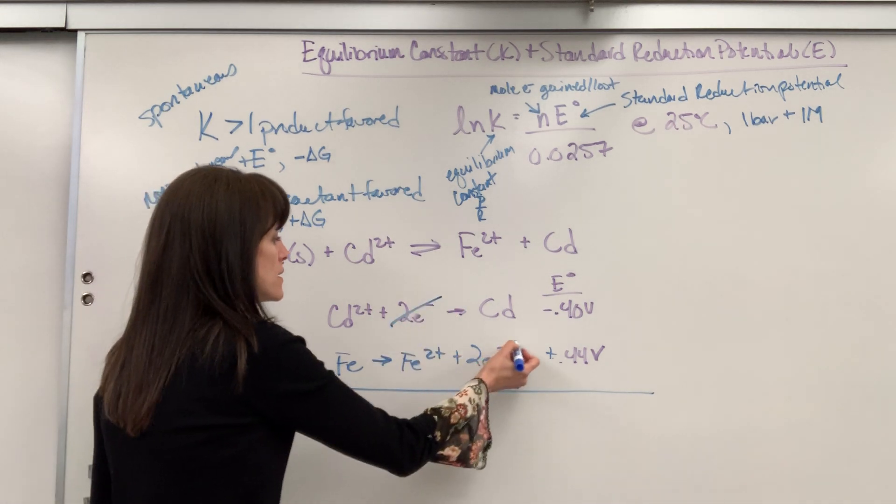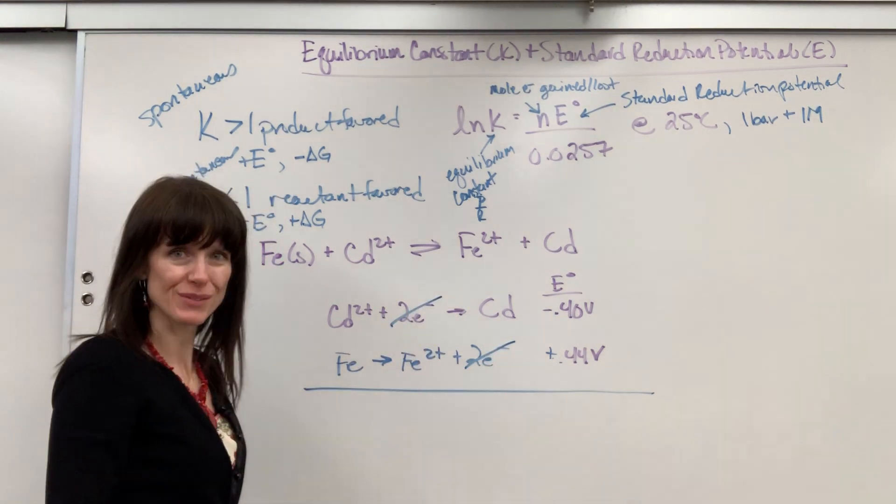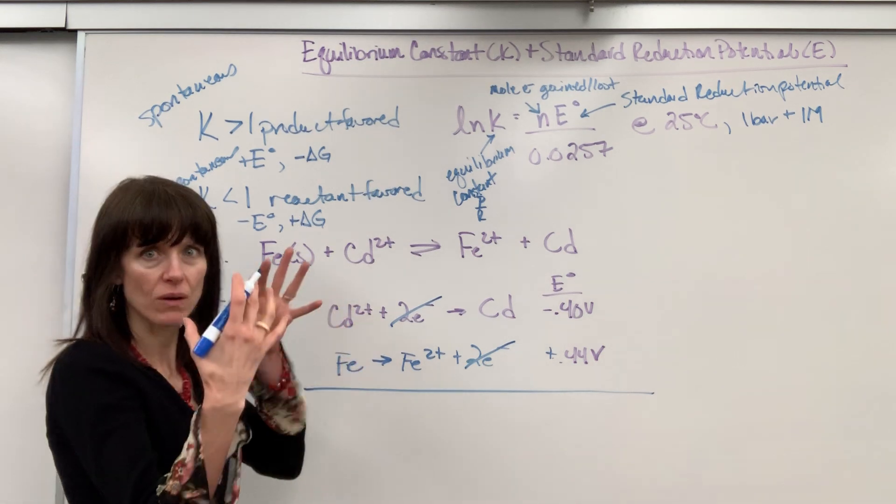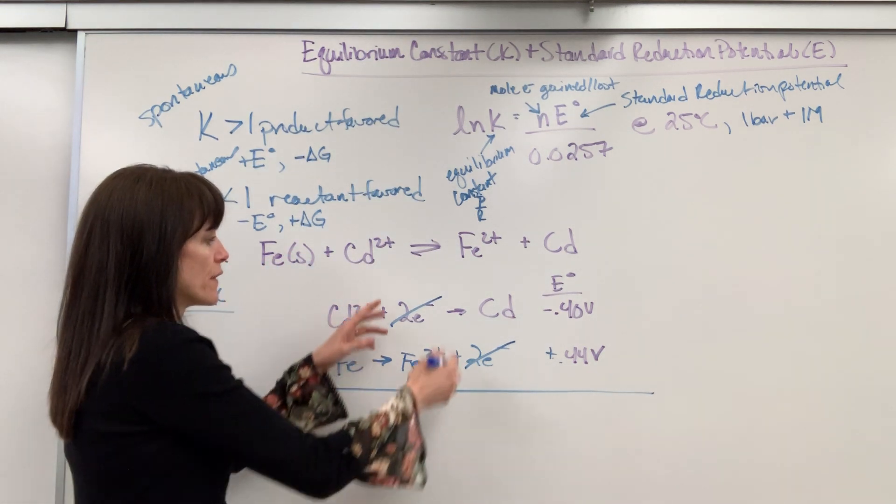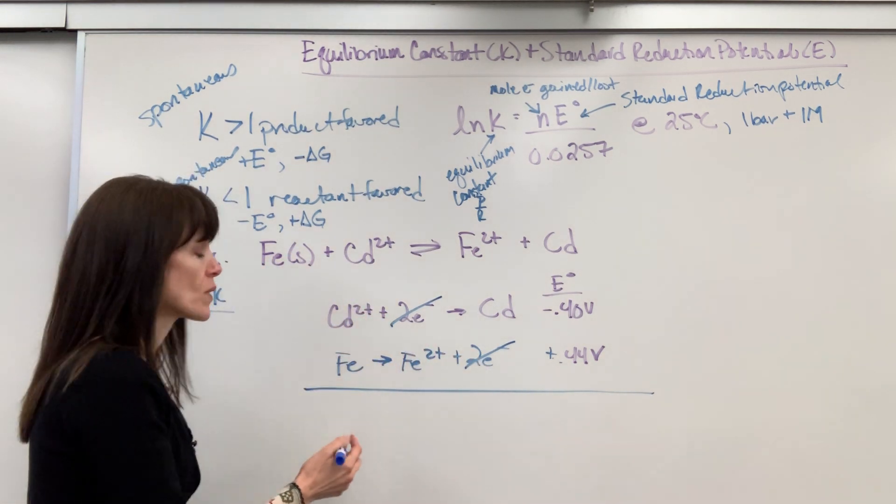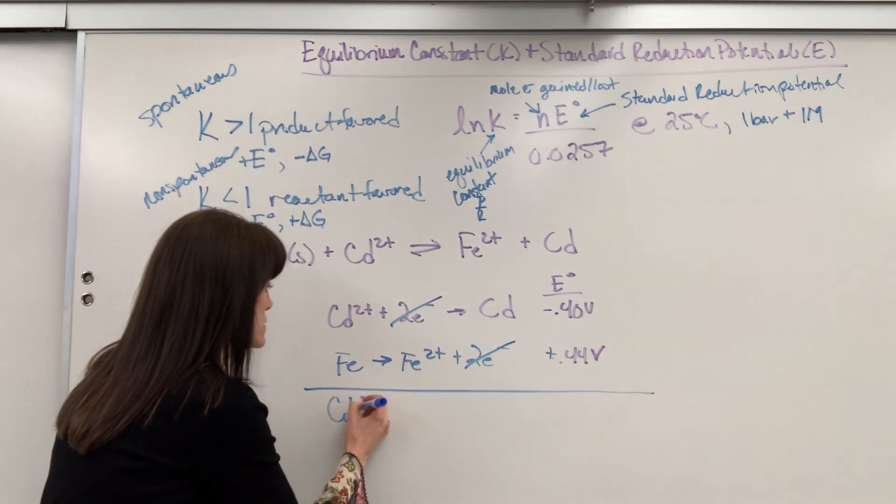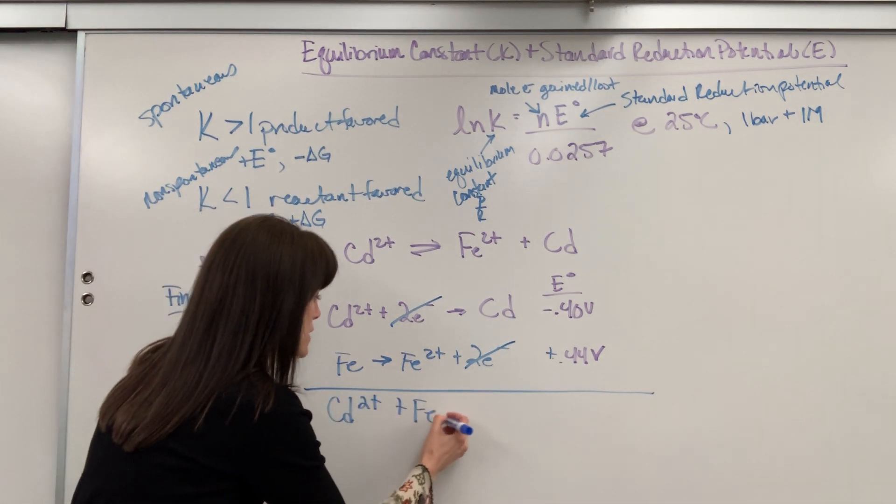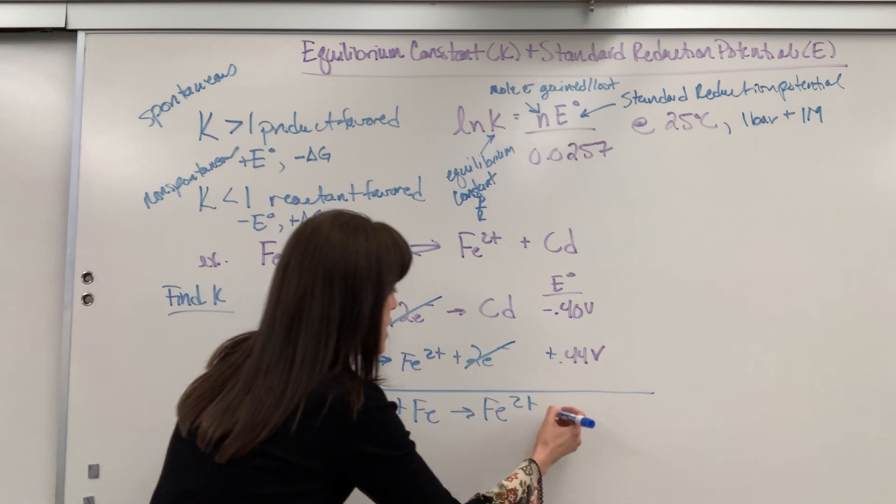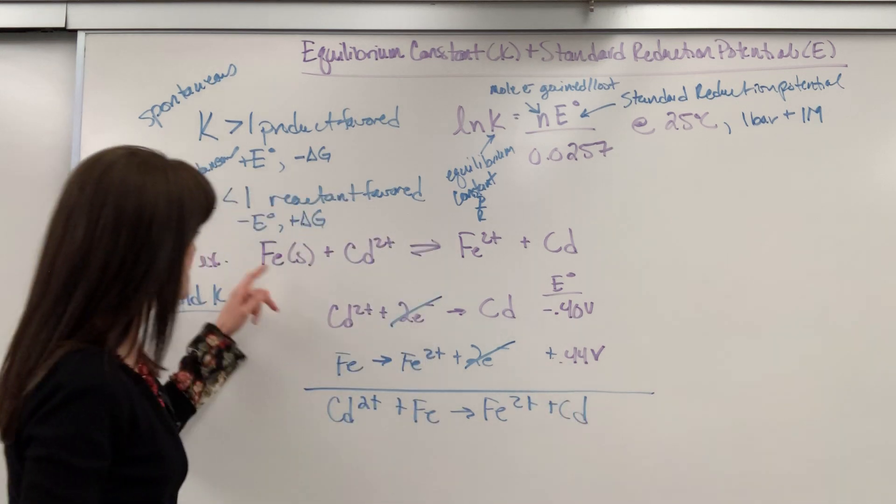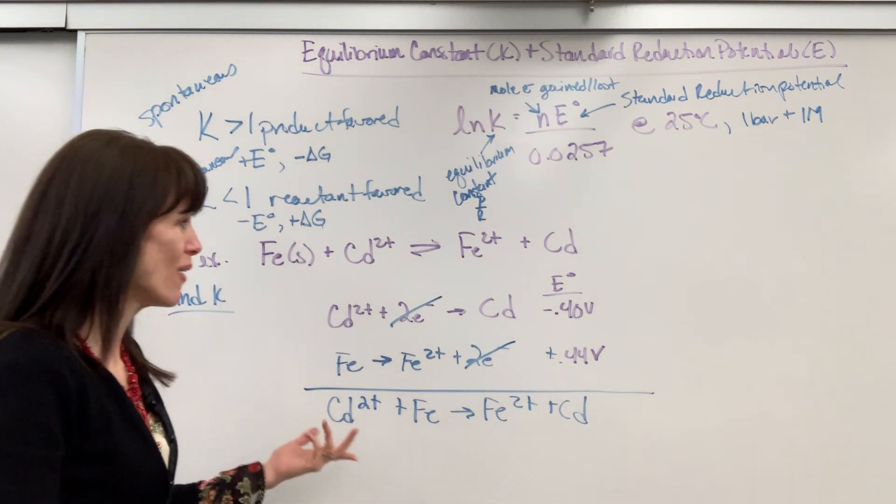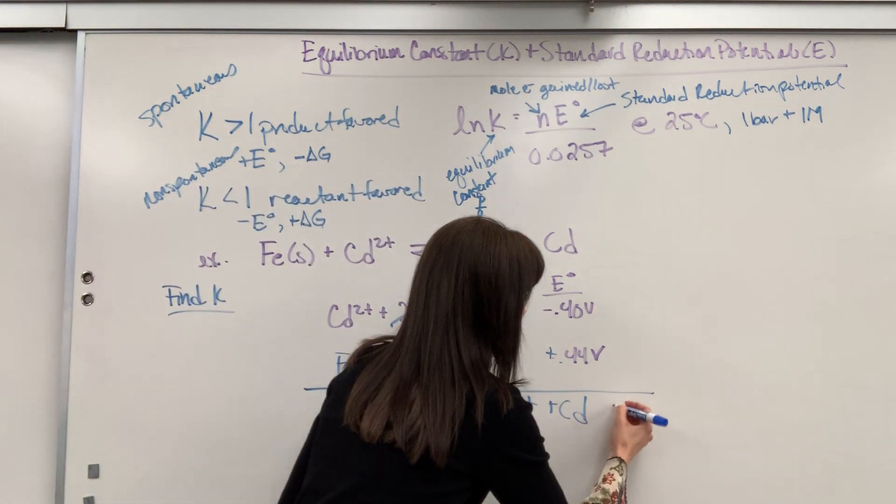The two electrons, I have two on the reactant, two on the product, so those cancel out. That's the goal when we add the half reactions, those numbers have to be equal. One of our rules with balancing redox reactions. Here is our balanced equation, and notice it matches.